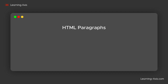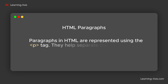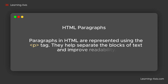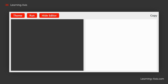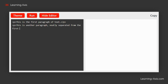Now let's look at HTML paragraphs. Paragraphs in HTML are represented using the P tag. They help separate blocks of text and improve readability. Each P tag creates a block of text with space above and below it. Use paragraphs to present information clearly and in chunks.